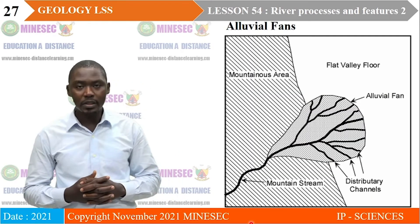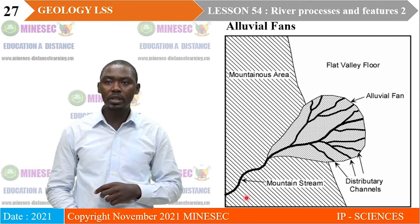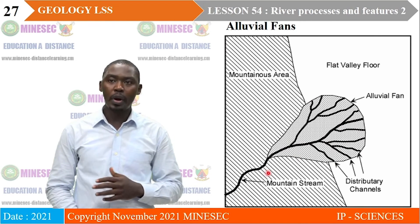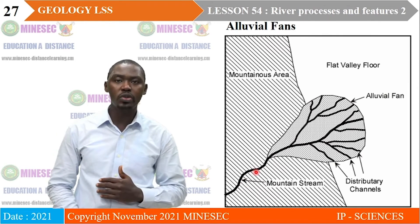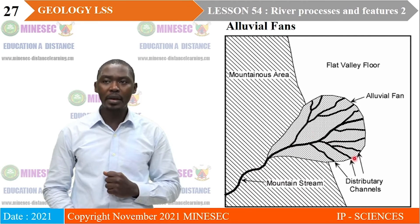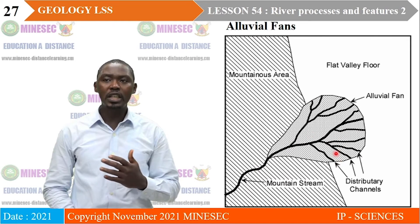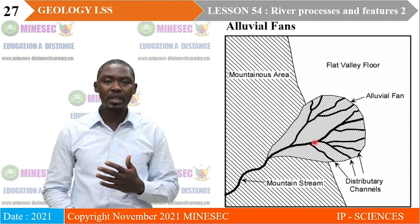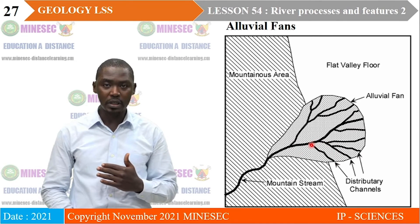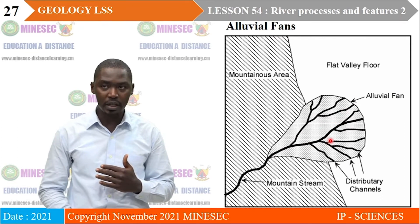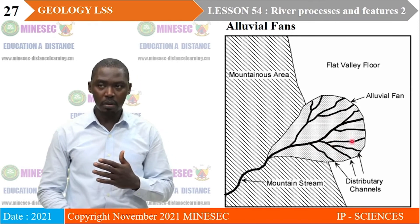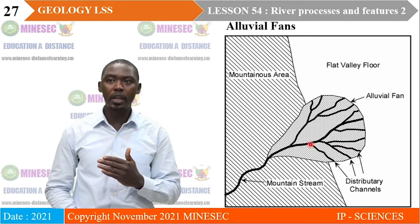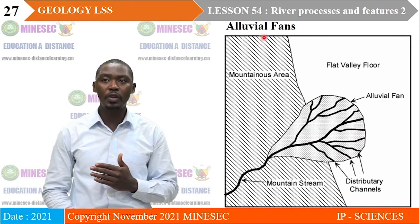Alluvial fans form where rivers take their rise from mountain areas and descend to lowland. When they gather sediments from the mountainous areas, the gradient gives them energy to transport those sediments. But when they reach the lowland areas, their energy dissipates very fast and they can no longer transport the sediments. They lay down the sediment and form a series of smaller channels within it — this fan-shaped structure resulting from the river's action is what we refer to as an alluvial fan.